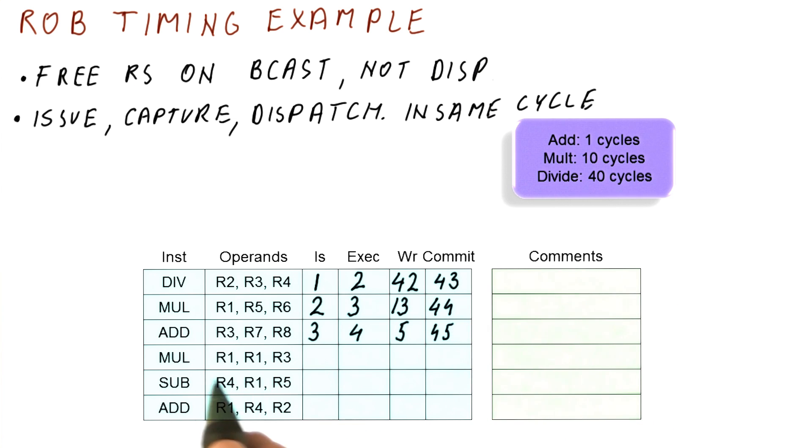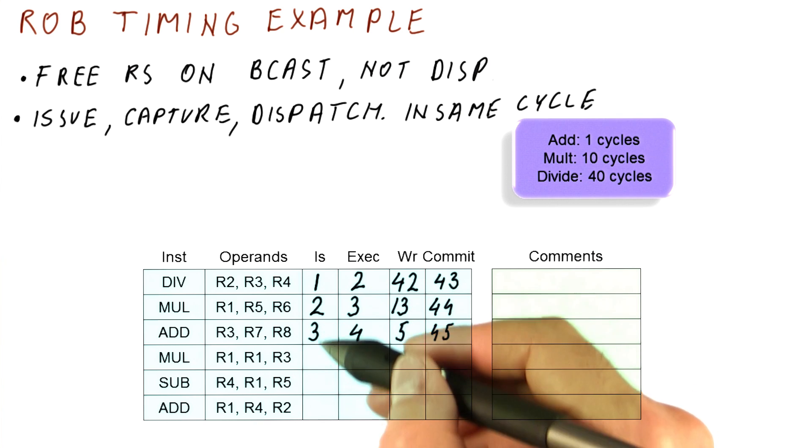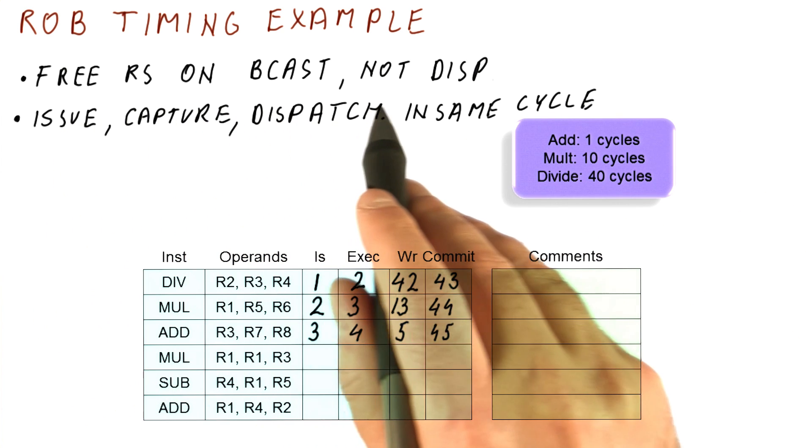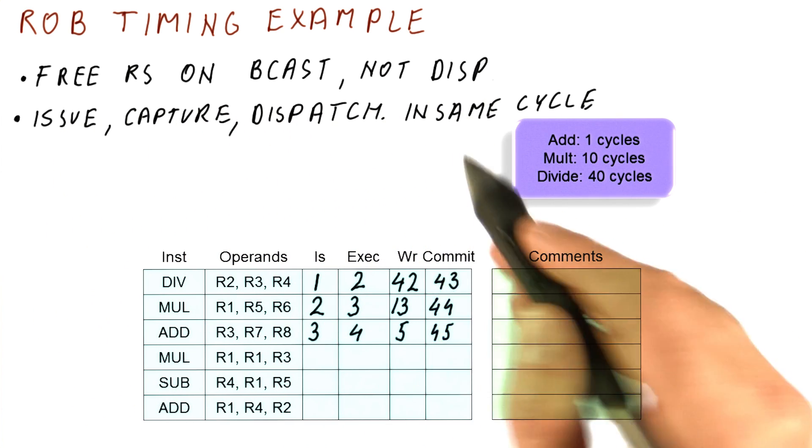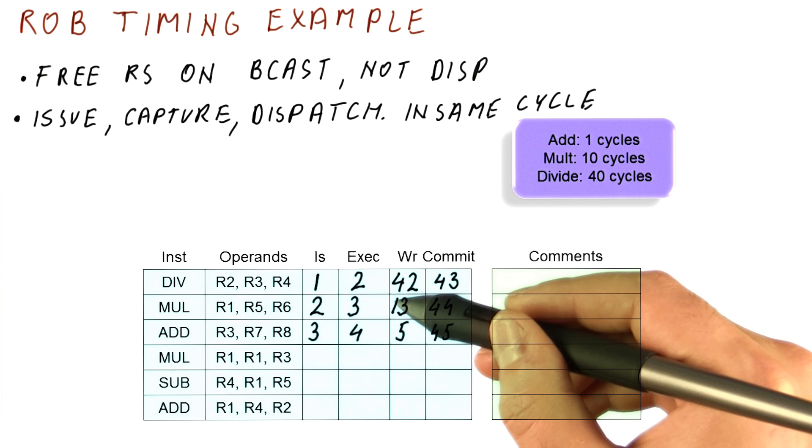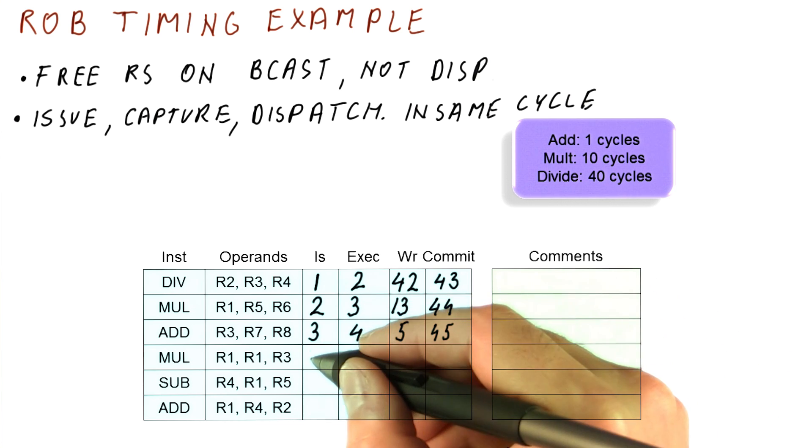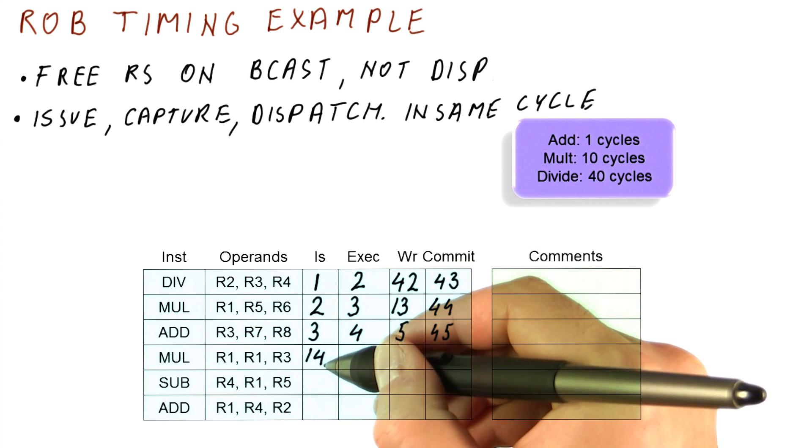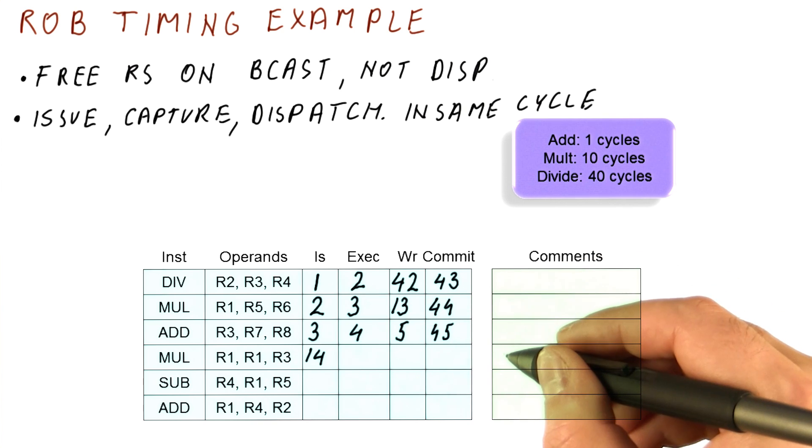Now things become a little bit more interesting, because this multiplication wants to issue in cycle four. Remember, we are issuing instructions in order. We have reached this instruction in cycle four, we want to issue it. However, we need a multiplication and divide reservation station for that. And we free reservation stations when we broadcast, not when we dispatch in this processor. So we already have, since cycle two, both of the reservation stations used. The first available one will become at cycle 13. So basically only in cycle 14, we can actually issue this instruction. So this instruction was waiting to issue, but couldn't because there was no free reservation station. So let's kind of note this.